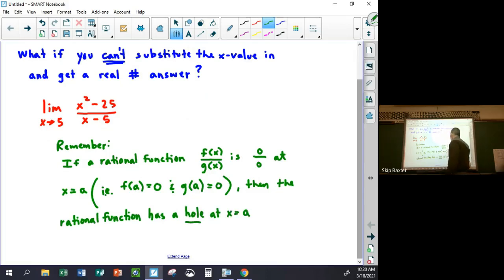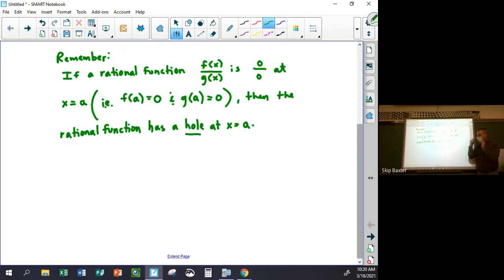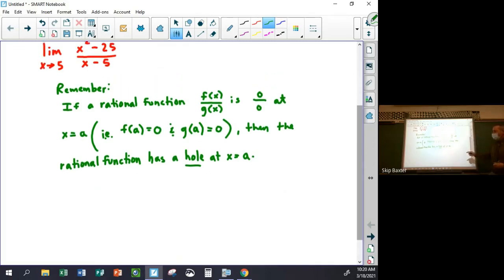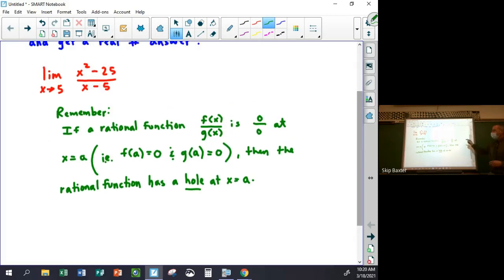And if you remember, when we talk about limits, if there's a hole in the function, then the y value is just like the y coordinate of that hole, right? That's what we talked about last week, is if you have a limit of a function and it happens to be a point where there's a hole, then the limit is just the y coordinate of the hole. And if you remember from before that, when we were talking about how to graph rational functions, to find the y coordinate of the hole, all you have to do is factor the top, factor the bottom, cancel the common factor, then plug in the y value. So that's all you're going to do here, okay?